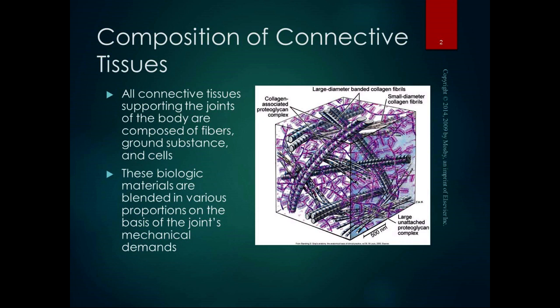We have some connective tissues that are arranged in a more organized fashion, like tendons and ligaments, and some of them are kind of higgledy-piggledy — a little bit more loose. The arrangement of them depends on the mechanical demands of the joint. Do we need cartilage that's going to be super tough? Do we need ligaments that are going to restrict motion? Or do we need something that's a little flexier, like the joint capsule?